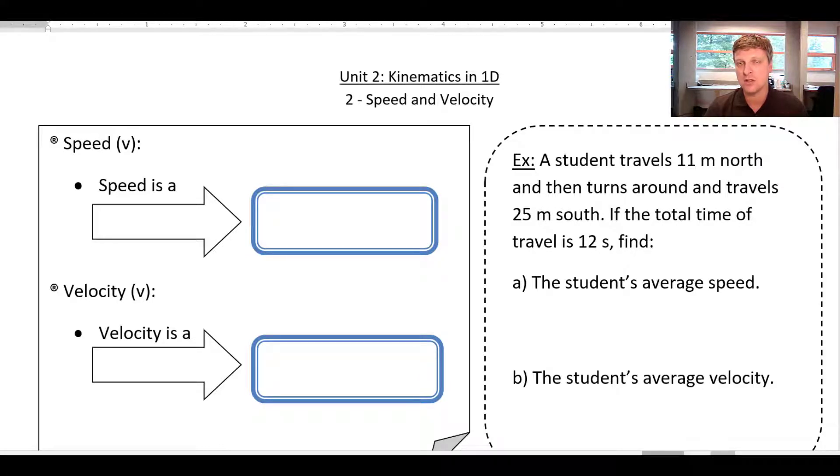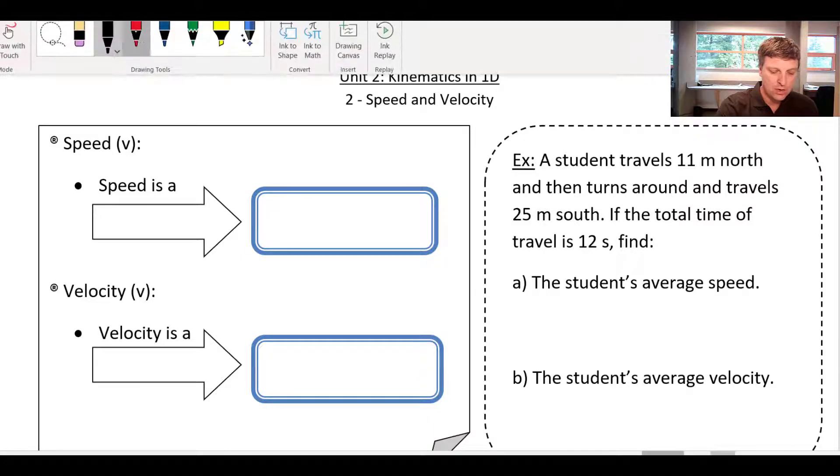And an example of that are the words speed and velocity. We tend to think of those two as being the same thing, but what we'll see is that in physics they have a very specific meaning. So they actually can be different from each other.